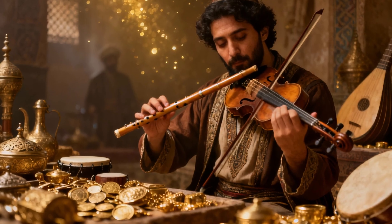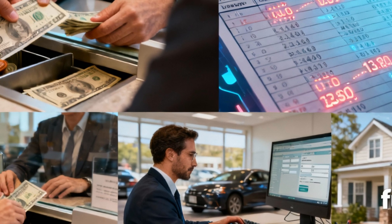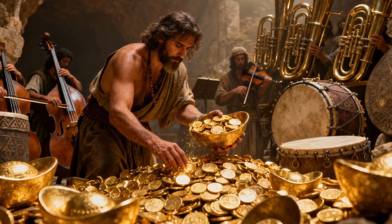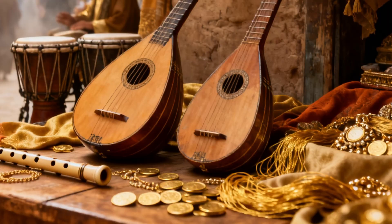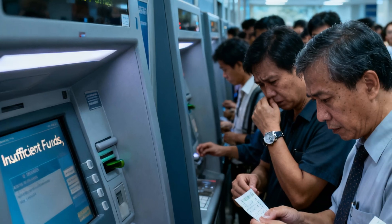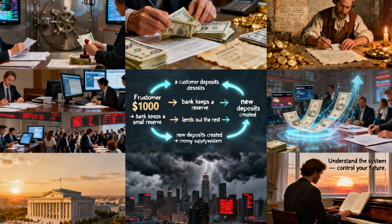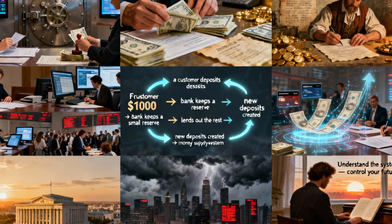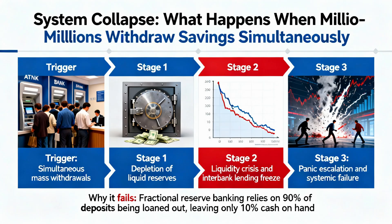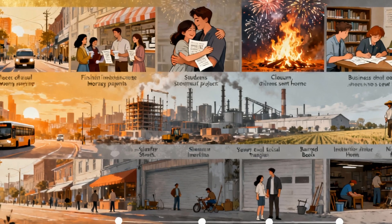Looking back at history, in earlier times rich people preferred to entrust their wealth to goldsmiths or coin makers instead of keeping it in their homes. In exchange, they received a paper receipt guaranteeing they could exchange it for gold or silver whenever they wanted. Eventually people started to use these receipts directly in trade. But then an interesting trick emerged: the goldsmiths realized that customers rarely wanted to withdraw their money at the same time, so they printed more receipts than the real gold or silver they had, and lent those papers out with interest.